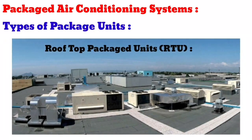Rooftop package units, or RTUs, are installed on the roof and air is blown downwards through the ductwork. The units are set on curbs that are flashed into the roof. Typical cooling capacity ranges from 3 to 50 tons. These are very commonly used in single storey structures, especially warehouses and superstores.